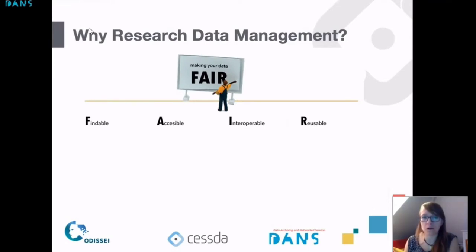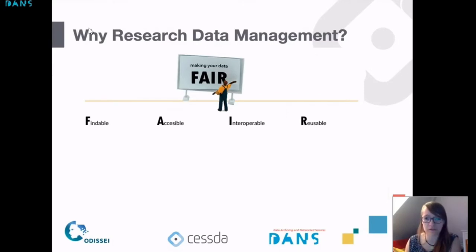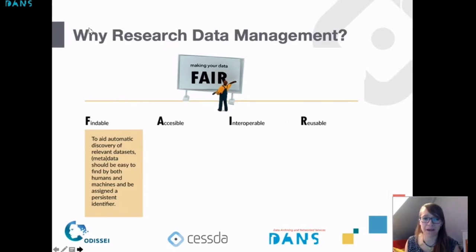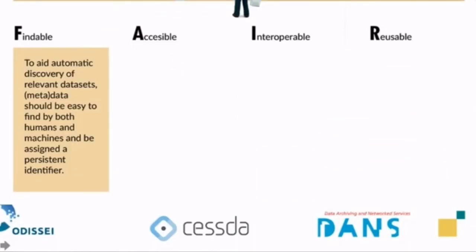Research data management is at the core of what we now call the FAIR principles. I'm sure many of you may have heard about these principles and the idea that we should make our research data FAIR. FAIR stands for Findable, Accessible, Interoperable, and Reusable. The Findable part basically translates to making your research discoverable — datasets and metadata should be easy to find by both humans and machines, and should have a persistent identifier.